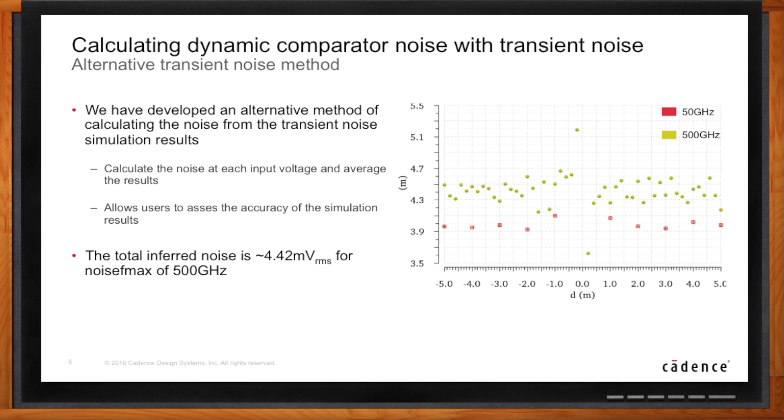That means while we're simulating it operating, we're also simulating how noise affects it. We can look at this plot here. If we have a large offset at the input, sometimes we're going to get an error. If we have a very small offset at the input, we're going to get an error more often. We can plot that curve of offset versus error, and that looks like an error function. We can put that in Excel and fit, and we can actually calculate the noise. In this example, we got about 4.4 millivolts of noise.